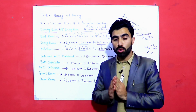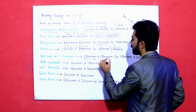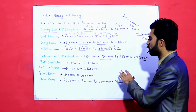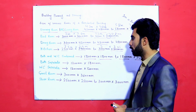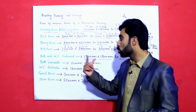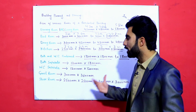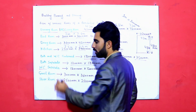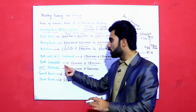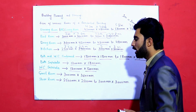For a combined bath and water closet, the size should be 1800 mm by 2500 mm. If bath and water closet are separate, the bath should be 1200 mm by 1800 mm, and the separate water closet should be 1200 mm by 1200 mm.